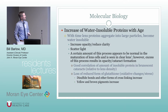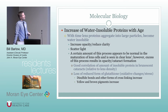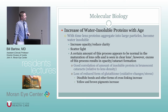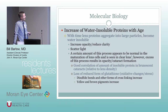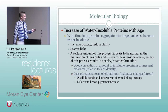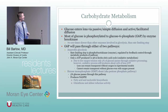With age, water-insoluble proteins increase as protein aggregates into large particles that become water-insoluble. This results in opacity and light scattering — reduced clarity, or cataract. Some of this process appears normal with lens cell maturation and is seen in clear lenses, but excess of it results in the cataract formation we see with age. There's a reasonably good correlation between the amount of insoluble protein and brunescence of a cataract. Loss of reduced glutathione, oxidative stress, disulfide bonds, pigment formation, and cross-linking all result in cataracts.